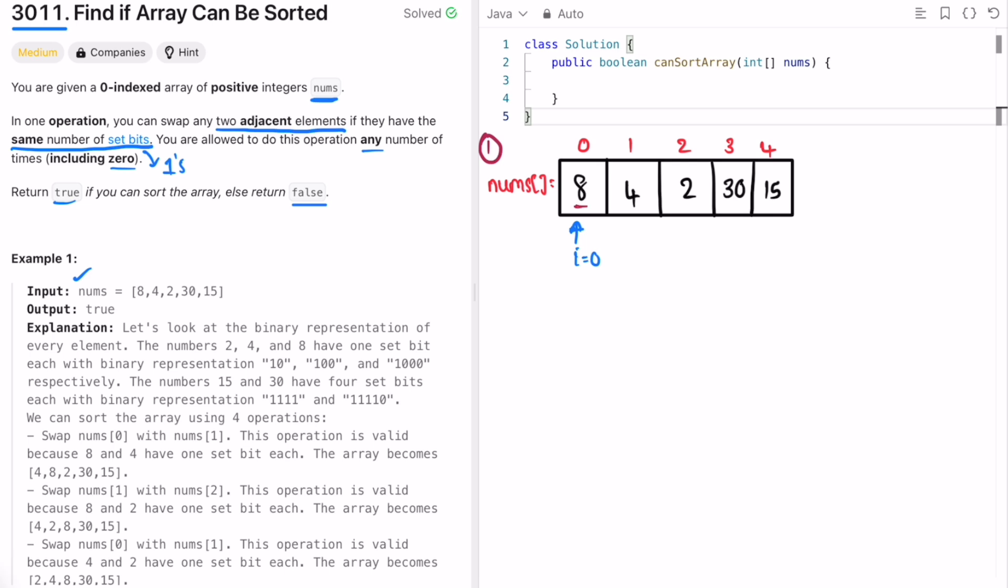For every number let's write down the binary value. So let's take the 8421 code. Set 1 wherever you need the sum. So 8 can be written as 1000 and 4 can be written as 0100.